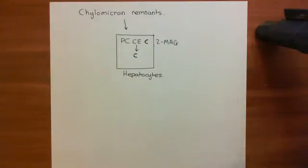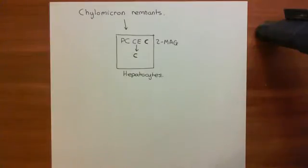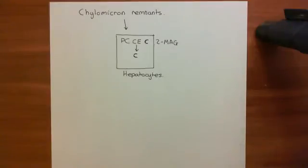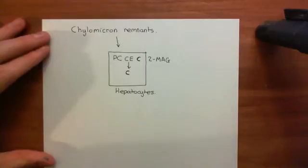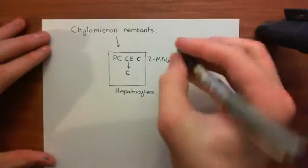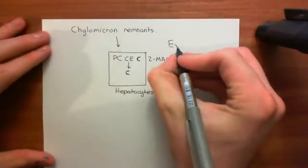These chylomicrons will eventually run out of triacylglycerol and they'll become very high in cholesterol, cholesterol esters, and also phospholipids. Eventually, these chylomicron remnants will go to the liver and they'll be removed by the hepatocytes and broken down. That pathway by which we can feed the cardiomyocytes and the skeletal myocytes with fat during the fed state is called the exogenous pathway.